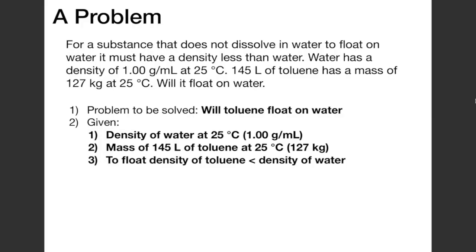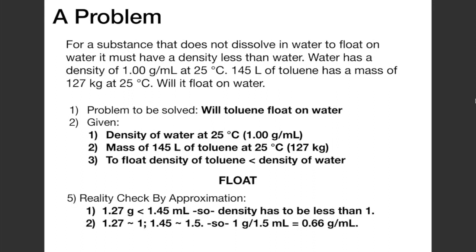We've determined that toluene can float on water. Now we need to use approximations to determine if this is a reasonable answer. We can do this in two ways. The first is to realize that kilograms per liter and grams per milliliter are equivalent to one another. Dividing 127 and 145 by 100 gives 1.27 grams per 1.45 milliliters. The density by definition has to be less than 1, therefore toluene will float on water.